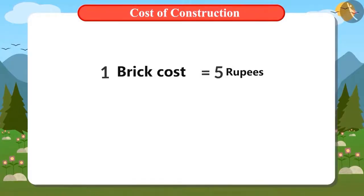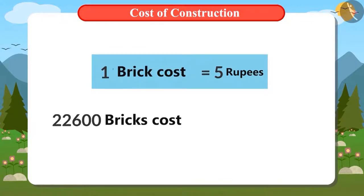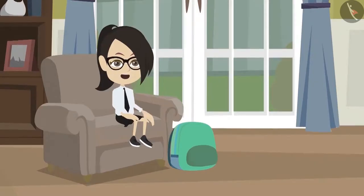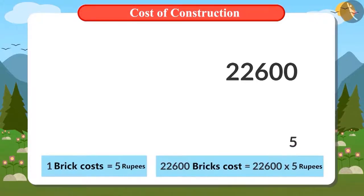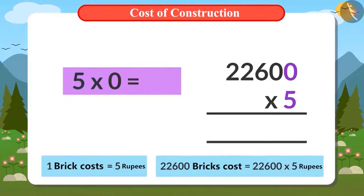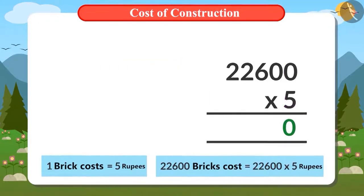A brick costs 5 rupees. To find the value of 22,600 bricks, we will multiply 22,600 by 5. We write 22,600 and 5 to multiply them. First, 5 is multiplied by 0, and the answer is 0.